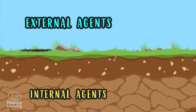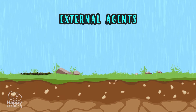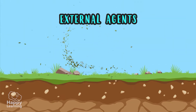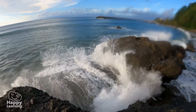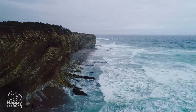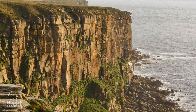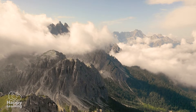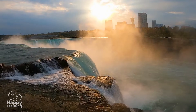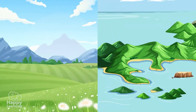The external agents, on the other hand, can be rain, wind, or waves that crash, wearing down and even remodeling the land until they create these huge cliffs. The relief has many forms, and to get to know them, we are going to divide them into two groups: inland relief and coastal relief.